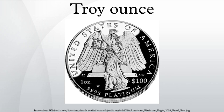Likewise, the grain, identical in both the troy and avoirdupois systems, is still used to measure arrow and arrowhead weights in archery, along with projectile and propellant weights in ballistics. The troy ounce and grain were also common to the apothecary system long used in medicine, but have been largely replaced by milligrams.